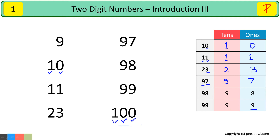So, what did we observe? We saw that 10 is the smallest two-digit number and 99 is the biggest two-digit number. I hope this is clear to you.